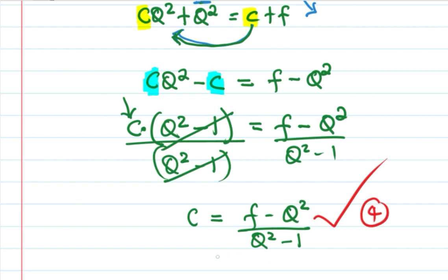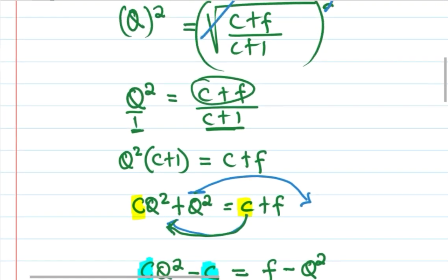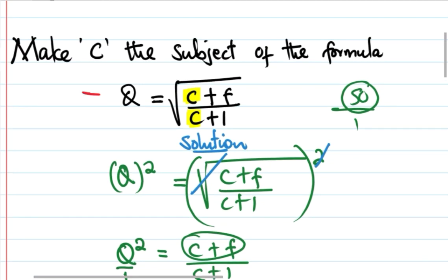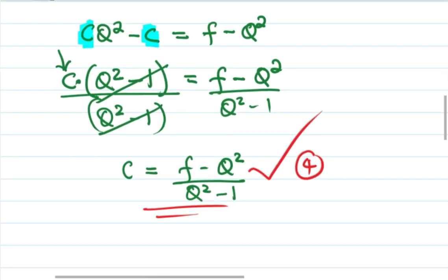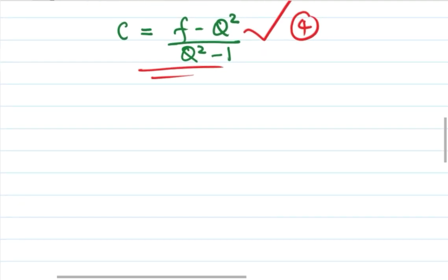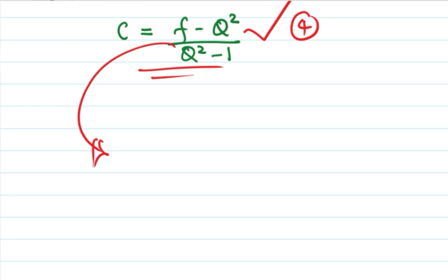So that's the solution of this problem. Now we should make Q the subject. From this question we want to make Q the subject of the formula. You can see Q squared, so the first thing you need to do is deal with Q squared.